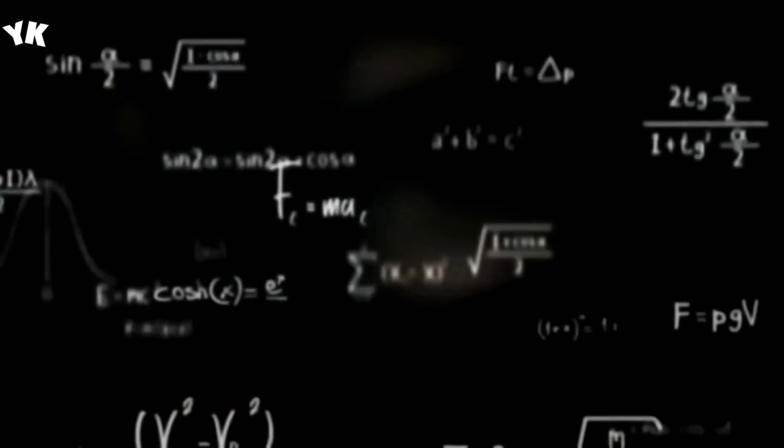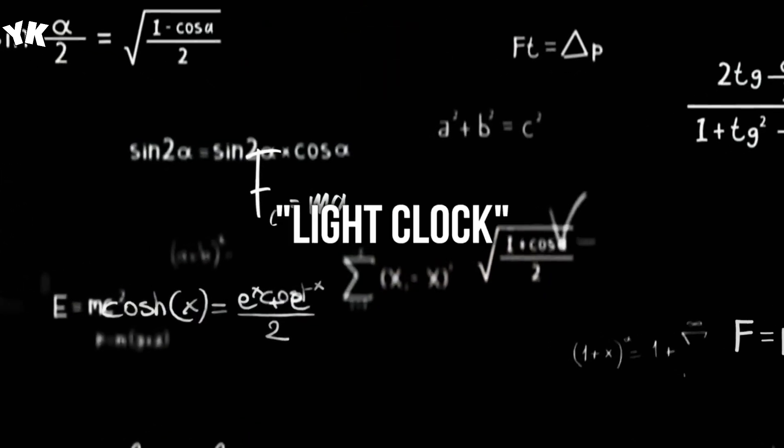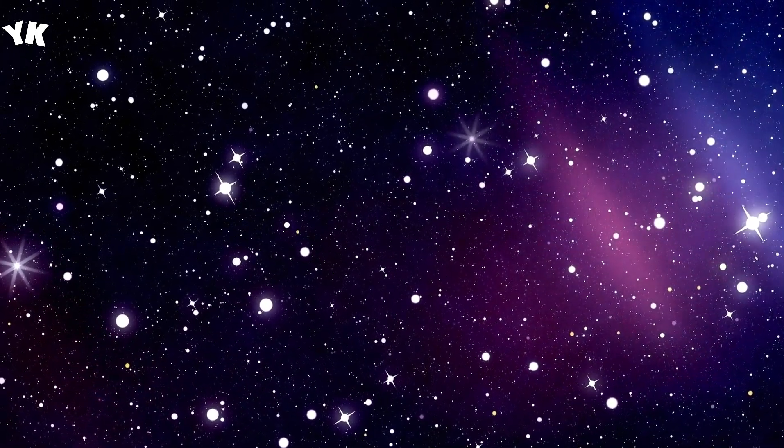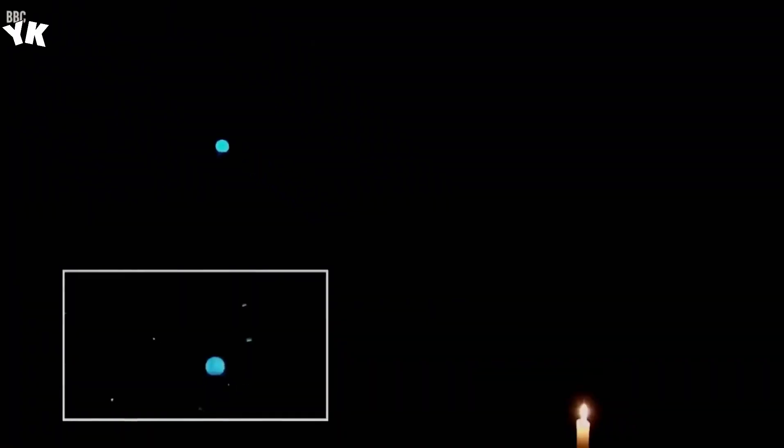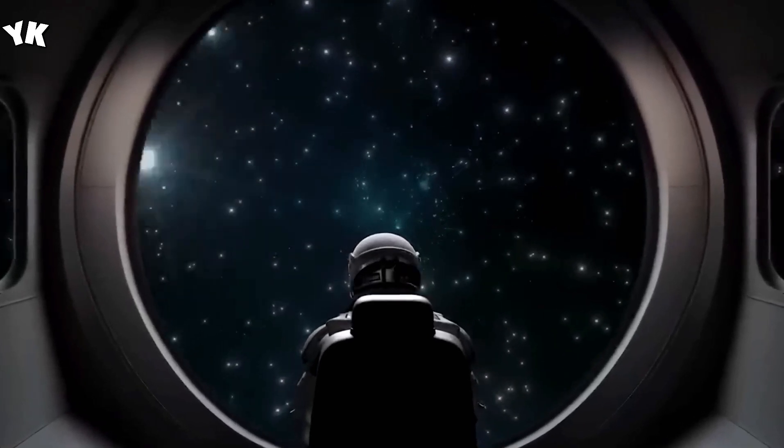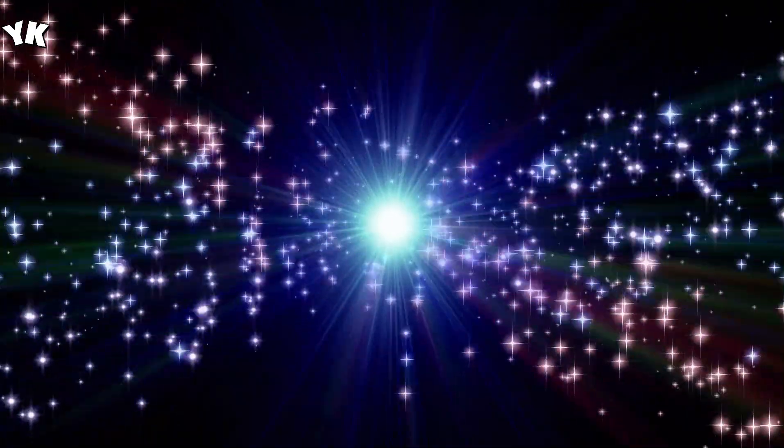Another thing that comes from this special way of looking at things is length contraction. This means that if something is moving, it looks shorter in the direction it's moving when you look at it from a spot that's not moving. And then there's this famous equation: energy equals mass times the speed of light squared. That comes right out of this special way of thinking. It shows that energy and mass can change into each other, which is a big deal for understanding how tiny particles act when they're zooming around really fast and also for things like what happens when atoms split in nuclear reactions.